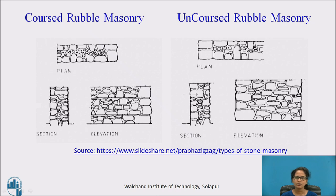Next we have uncoursed rubble masonry. In this type of masonry there are no courses maintained. Large stones are laid below, and over them small strips of stones called spalls are filled in the spaces between the stones. This type of masonry is used in godowns, garages, etc.